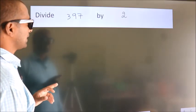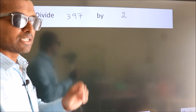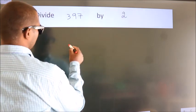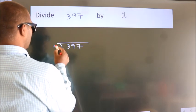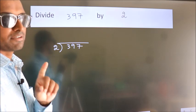Divide 397 by 2. To do this division, we should frame it in this way. 397 here, 2 here. This is your step 1.